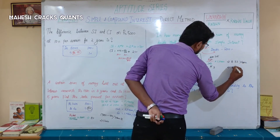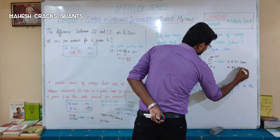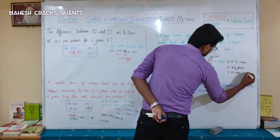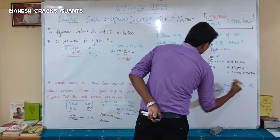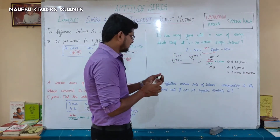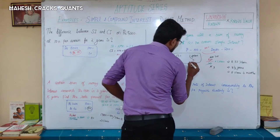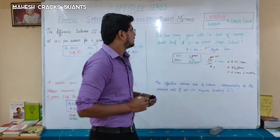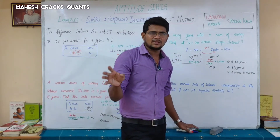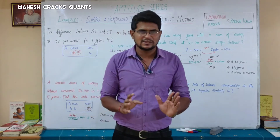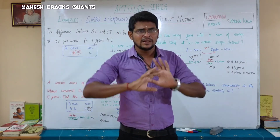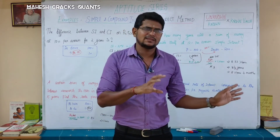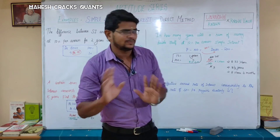8.33 years is the same as 8 and one-third years, or 8 years and 4 months. So the answer is 8 years 4 months. You need to invest at 12% for 8 years 4 months to double your money.